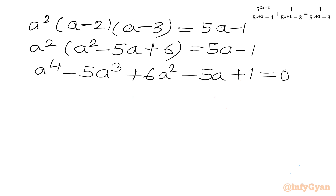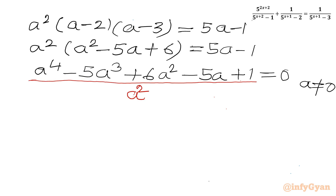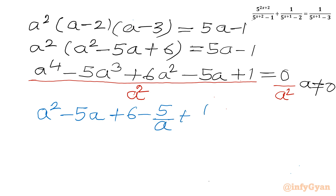Since a > 0, a is non-zero, so I can divide both sides by a². Dividing each term: a⁴/a² - 5a³/a² + 6 - 5/a + 1/a² = 0, which gives a² - 5a + 6 - 5/a + 1/a² = 0.